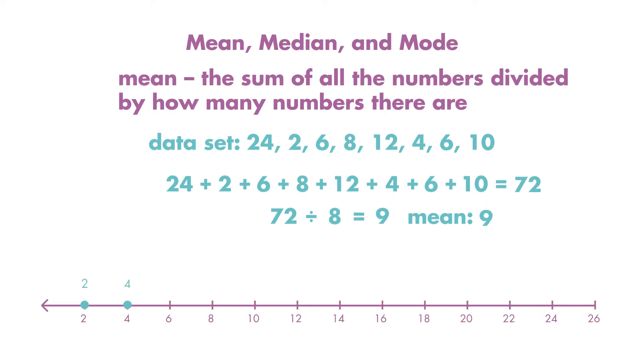Mean is the most commonly used measure of center, as long as there are no outliers. An outlier is a number that is far away from the rest of the set.